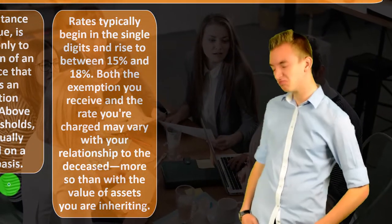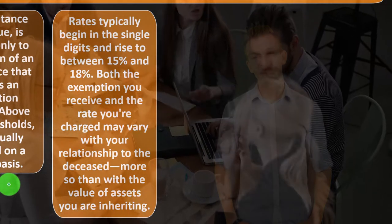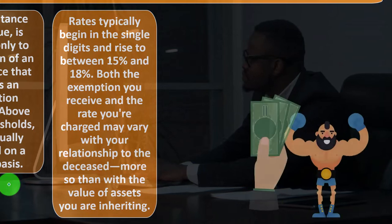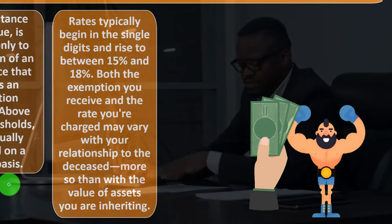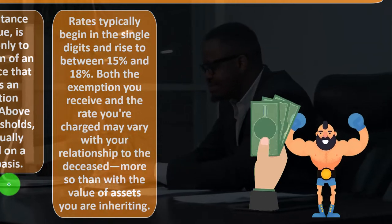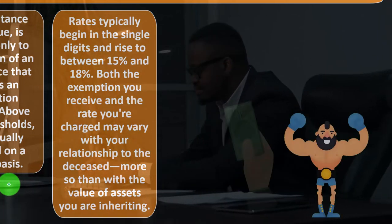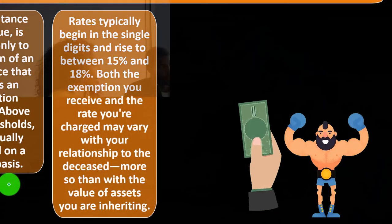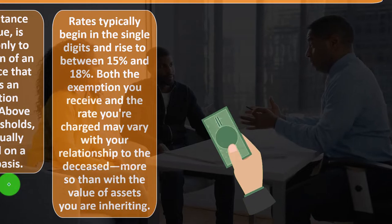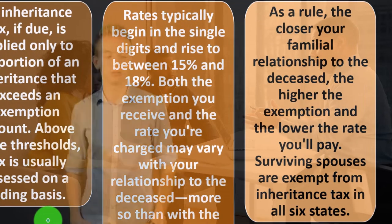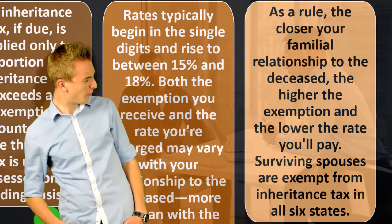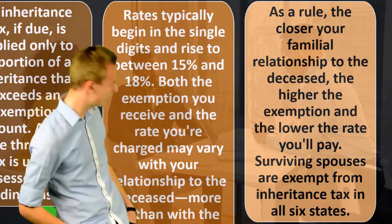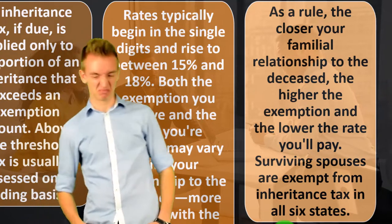Rates typically begin in the single digits and rise to between 15 and 18 percent. Both the exemption you receive and the rate you're charged may vary with your relationship to the deceased more so than with the value of assets you are inheriting. As a rule, the closer your familial relationship to the deceased, the higher the exemption and the lower the rate you'll pay.